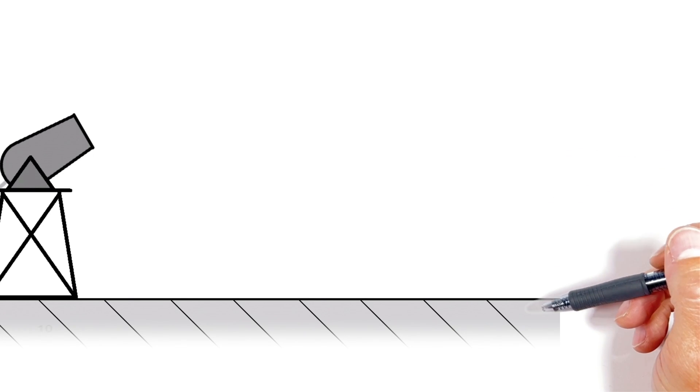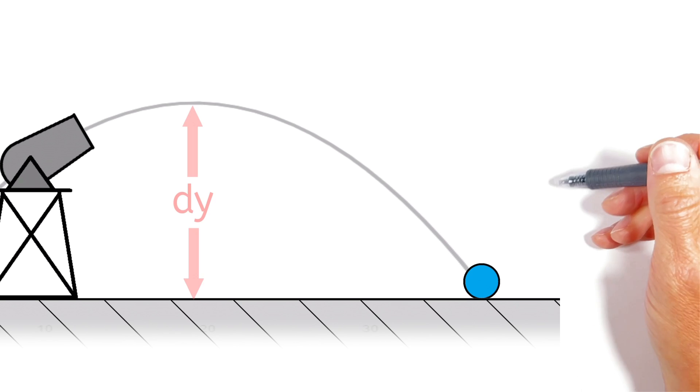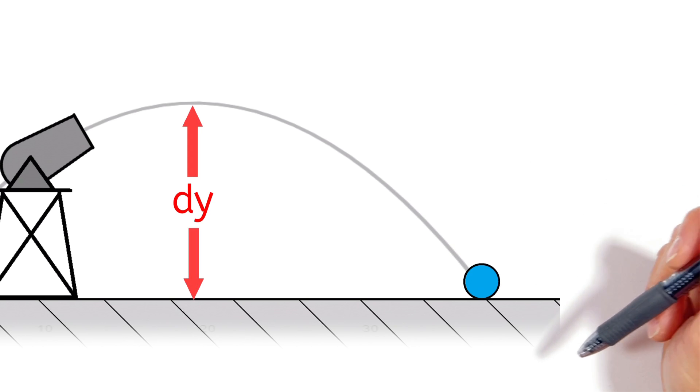All right, when dealing with projectile motion, anytime a projectile is fired across a level surface, it's the motion in the y-axis that eventually causes the projectile to land.